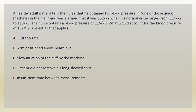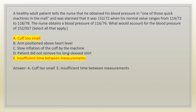A healthy adult patient tells the nurse that he obtained his blood pressure in one of those quick machines in the mall and was alarmed that it was 152/70 when his normal value ranges from 114/70 to 118/78. The nurse obtains a blood pressure of 116/76. What would account for the blood pressure of 152/70? Select all that apply. A. Cuff too small. B. Arm positioned above heart level. C. Slow inflation of the cuff by the machine. D. Patient did not remove his long-sleeved shirt. E. Insufficient time between measurements. Answer: A. Cuff too small, and E. Insufficient time between measurements.